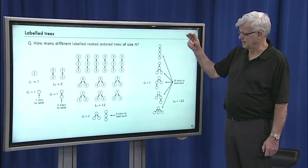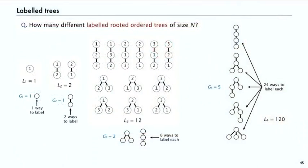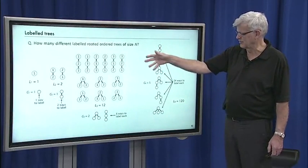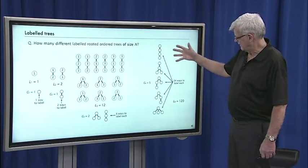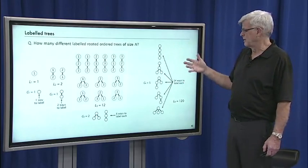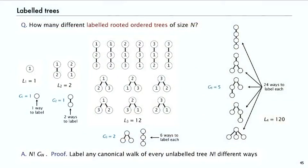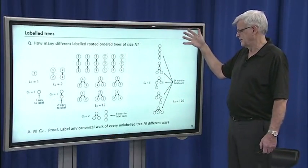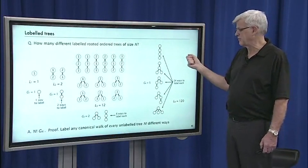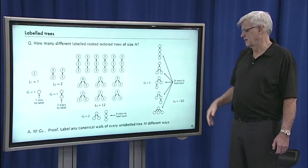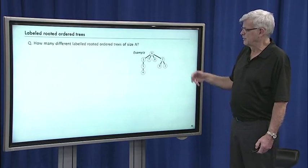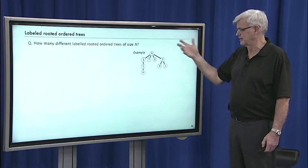How many different labeled rooted ordered trees of size n are there? There's one of size one, two of size two, and twelve of size three. You take each of the possible tree shapes and label them — there are six ways to label each, since you take all permutations. In both cases it's essentially a string of three nodes. This generalizes immediately: the number of labeled rooted ordered trees of size n is n factorial times the number of unlabeled trees, because you can label the nodes n factorial different ways. That's a combinatorial proof.